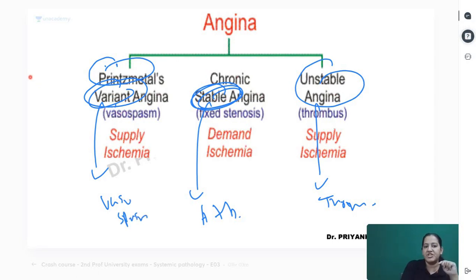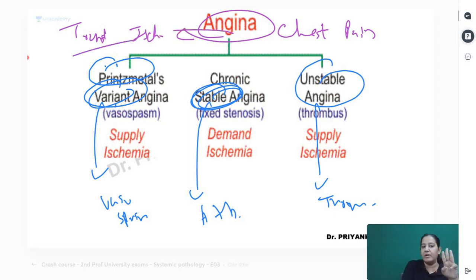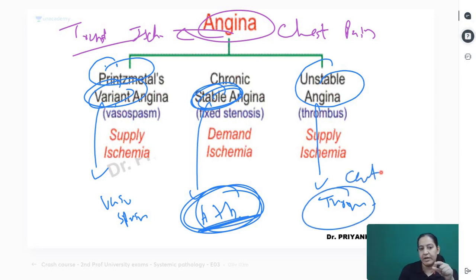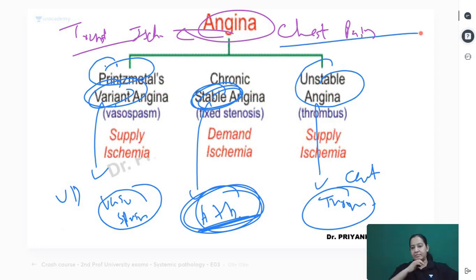In all three anginas, the patients have chest pain due to transient ischemia occurring in the left ventricle - the key word is transient. Three different etiologies mean three different treatments: in stable angina, you dissolve the atherosclerotic plaque; in unstable angina, you give antithrombotic drugs; in Prinzmetal angina, you give vasodilators. Three different anginas, three different etiologies, three different treatments, but the common symptom is chest pain.